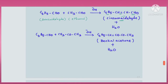If benzaldehyde reacts with an aliphatic ketone, acetone CH₃COCH₃ — a three-carbon ketone, propanone — in the presence of dilute base, you get an alpha-beta unsaturated ketone. This product is called benzalacetone. It is an alpha-beta unsaturated ketone formed from benzaldehyde and acetone, so it is called benzalacetone.